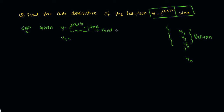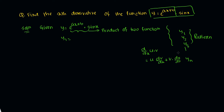We differentiate using the product rule: d/dx of (u·v) = u·(dv/dx) + v·(du/dx).